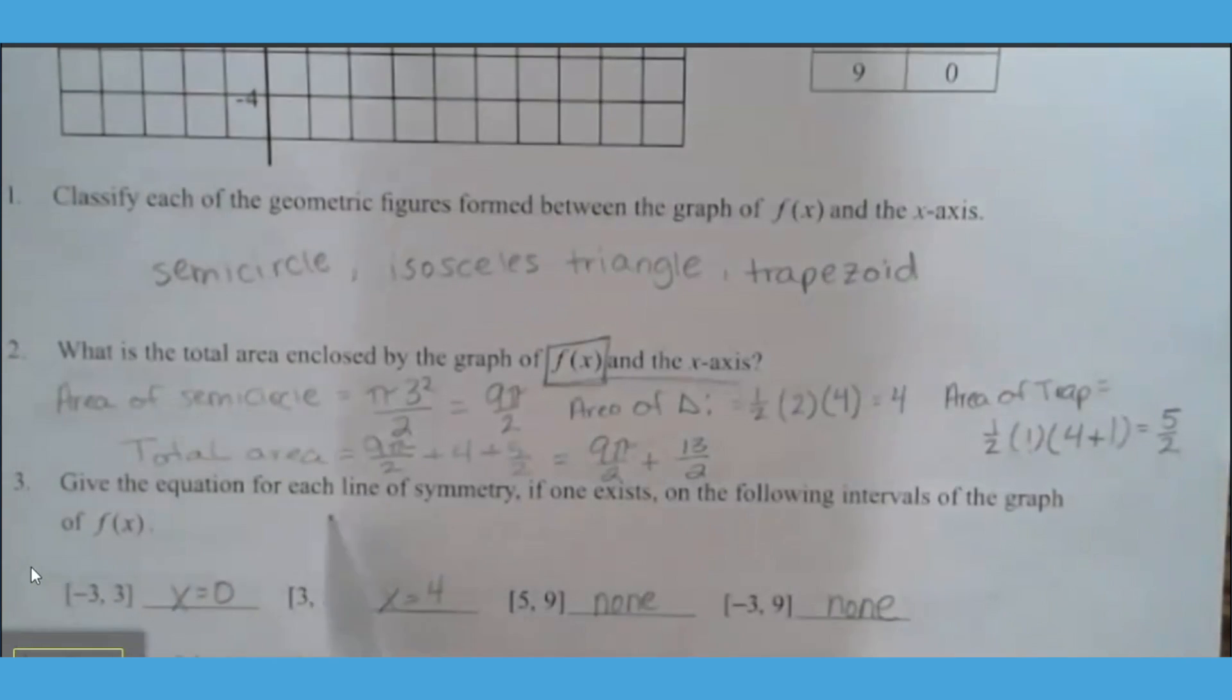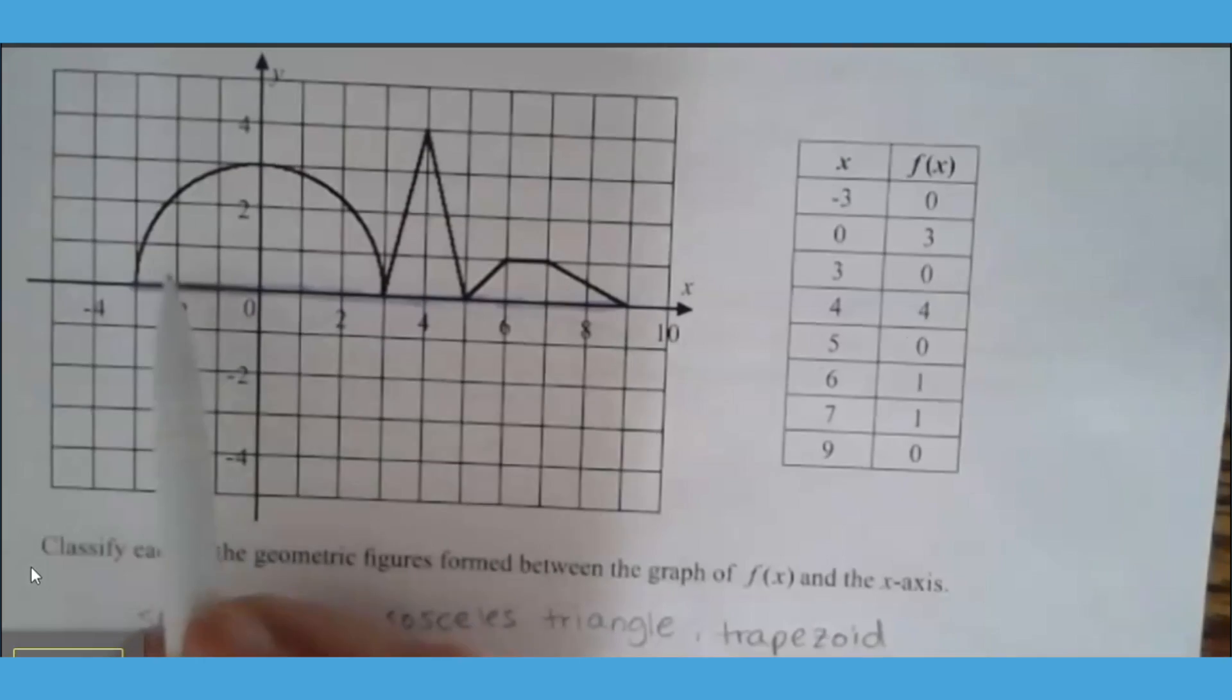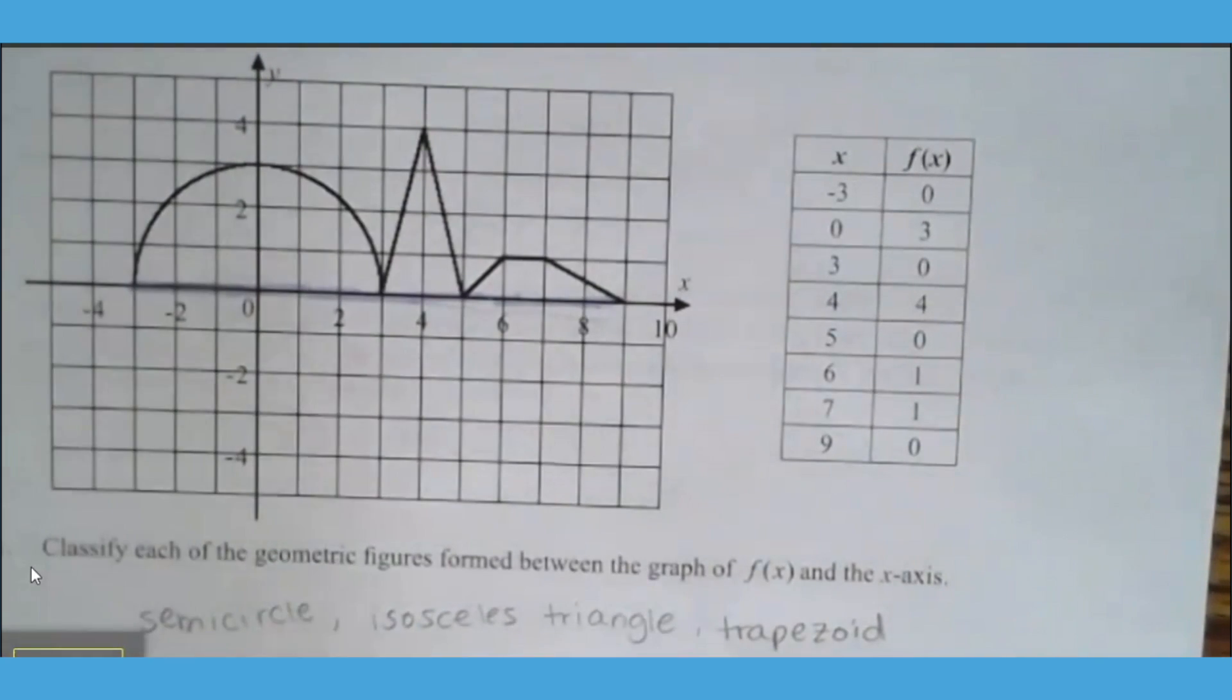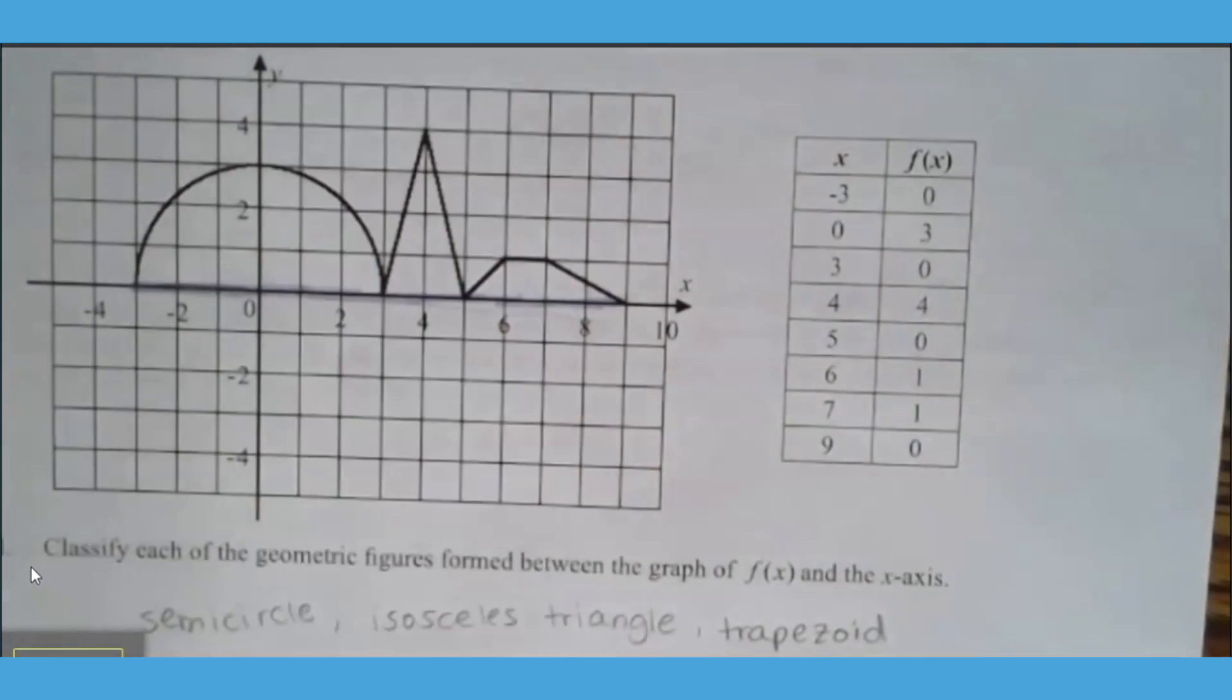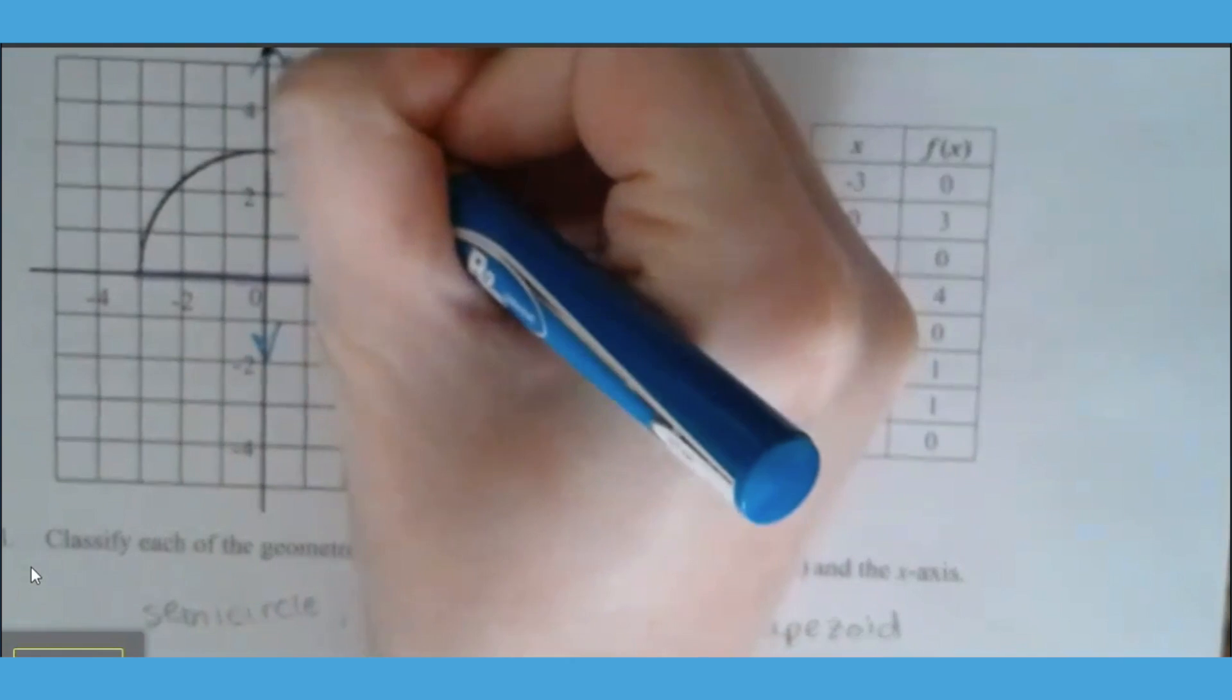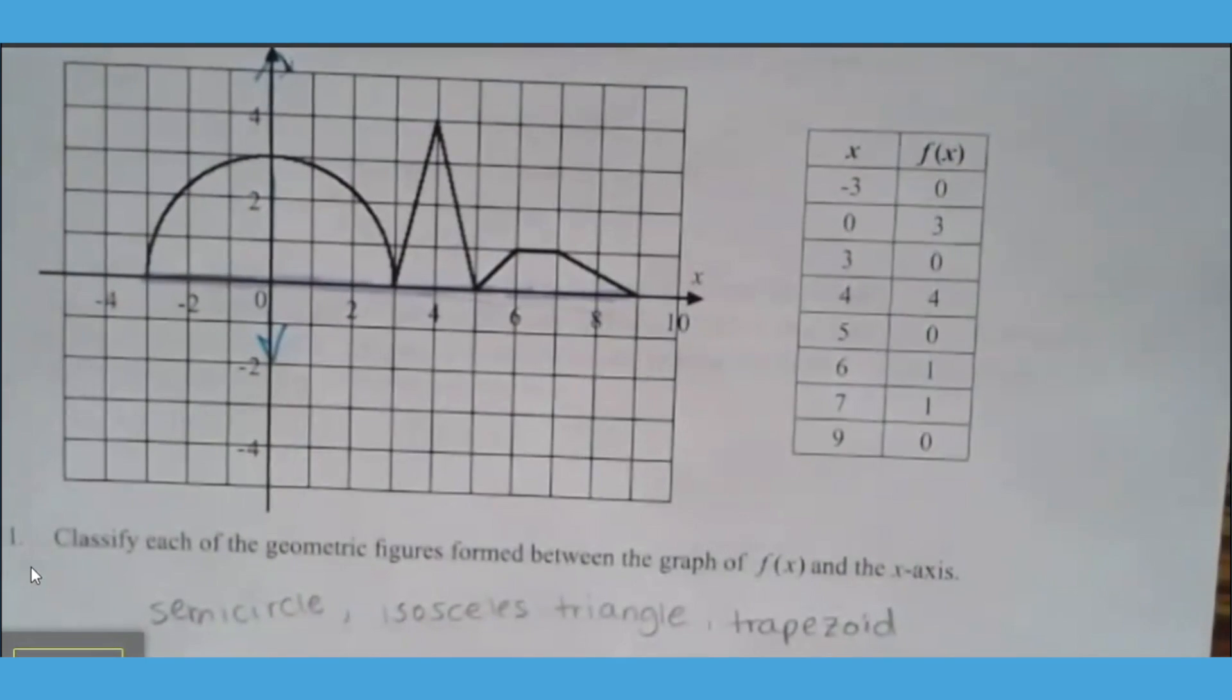For question 3, we are asked to find the line of symmetry if one happens to exist for each of those following intervals. Helping your students understand that this is not x is negative 3 and y is 3, but this is an interval from negative 3 to 3, from where x is negative 3 to where x is positive 3. I'm looking for that line of symmetry. That is going to happen here, which happens to be the equation x is equal to 0.